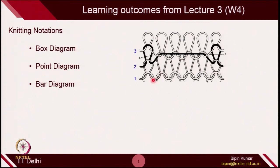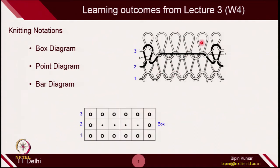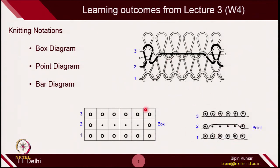You can see the complexities of these fabric structures, which are very difficult to draw on plain paper. You have to be careful about the technical front side and back side, which is extremely difficult when drawing with pen and pencil. So you need to represent these complicated structures with simple diagrams. A box diagram or point diagram can indicate the same design in a much simpler form. Let's look at the steps needed to design these diagrams.